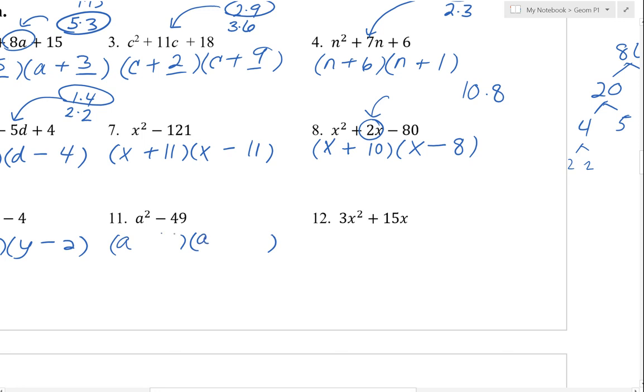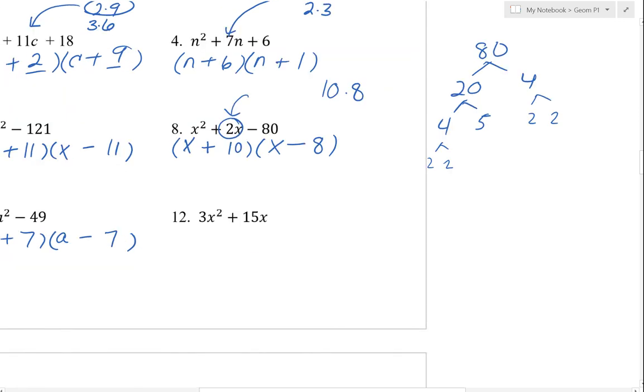Another difference of squares. Square root of 49 is 7. One's plus, one's minus.